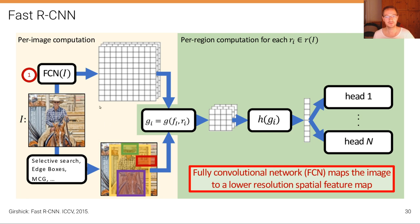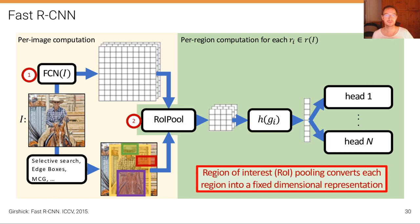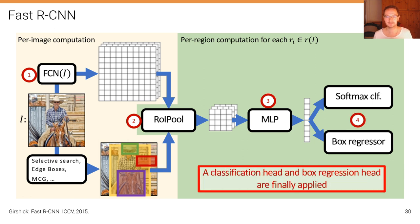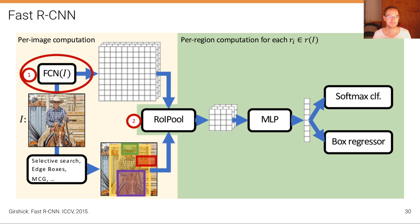In the second step, we apply region of interest pooling, which converts each region into a fixed-dimensional representation. Because we have done much of the processing in the per-image part already, we only require a lightweight multi-layer perceptron to process each region feature map. Then we have a classification head and a box regression head as before. The main difference is that much of the computation has been moved from the per-region area to the per-image area, making processing much faster — that's why it's called Fast RCNN.